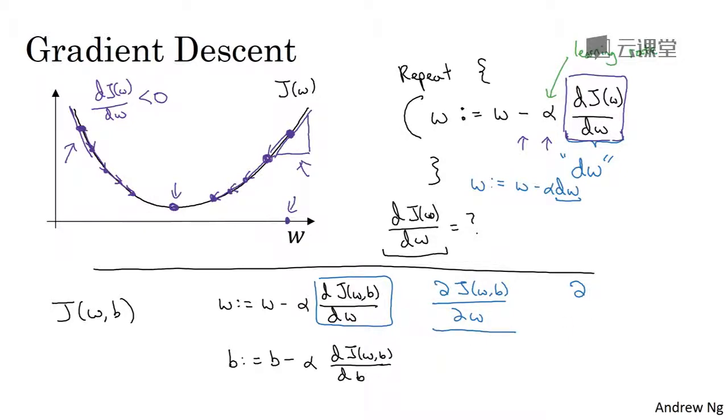But when you see this expression, all this means is this is the derivative of j of w comma b, or really the slope of the function j of w comma b, how much that function slopes in the w direction. And the rule of the notation in calculus, which I think isn't totally logical, but the rule in the notation for calculus, which I think just makes things much more complicated than you need to be, is that if j is a function of two or more variables, then instead of using lowercase d, you use this funny symbol. This is called a partial derivative symbol.